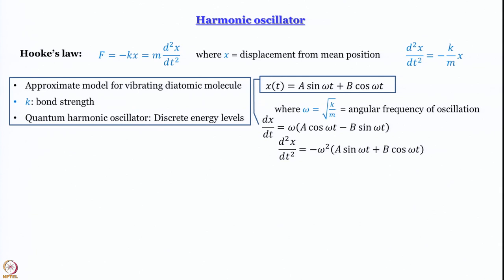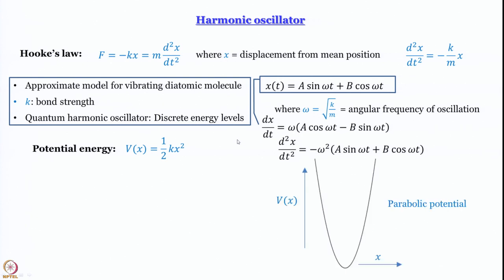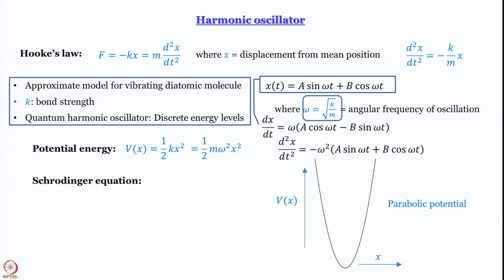This comes from classical mechanics. To go into the quantum world, we need to write the Schrödinger equation. The potential energy in this case is V = ½kx², which is a parabolic potential. Since ω² = k/m, we can write V = ½mω²x². Plugging this into the Schrödinger equation, the Hamiltonian becomes: -(ħ²/2m)·d²ψ/dx² + ½mω²x²·ψ = Eψ.